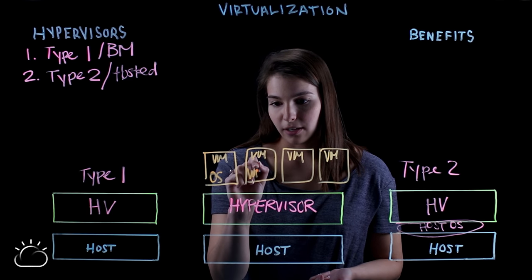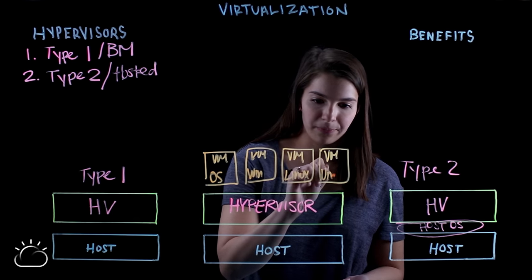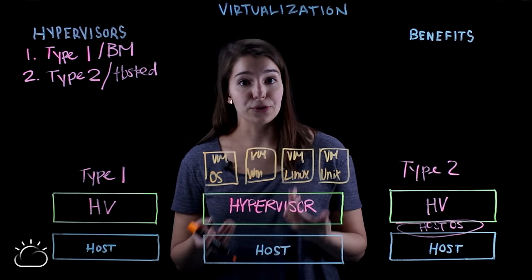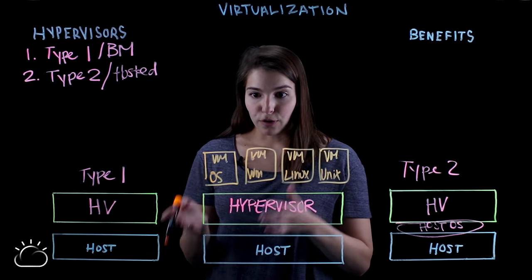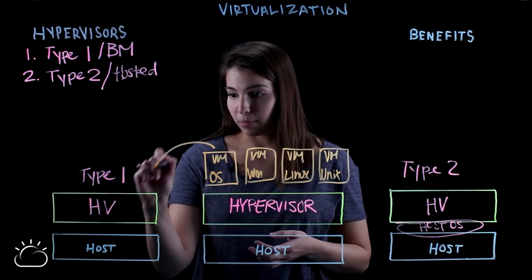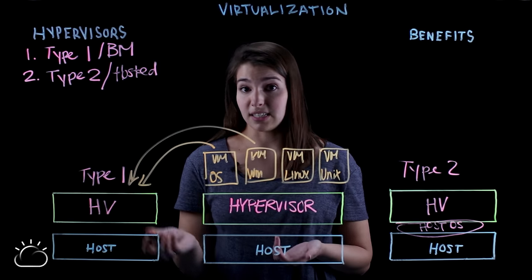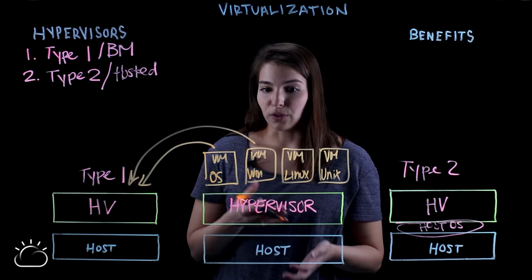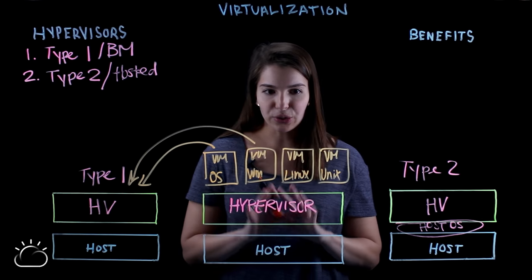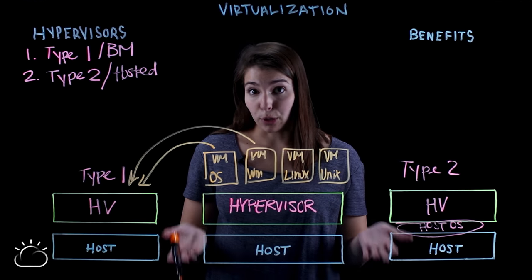You could run Windows on one, Linux on another, or Unix on another, for example. And because they're independent, they're also extremely portable. You can move a virtual machine from one hypervisor to another hypervisor on a completely different machine almost instantaneously, which gives you a lot of flexibility and portability within your environment. This is the core of virtualization as a process.